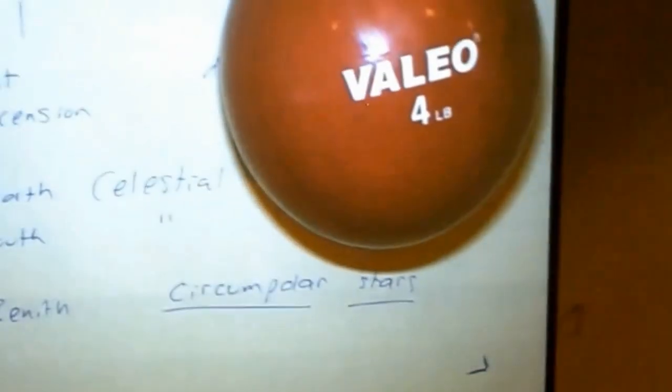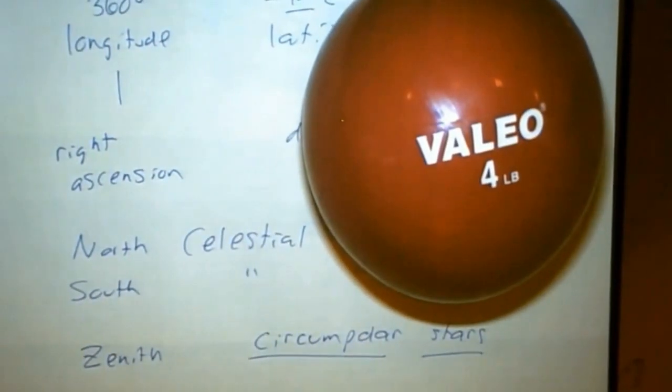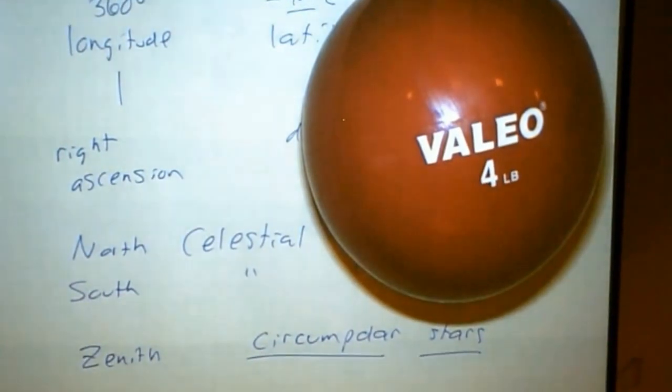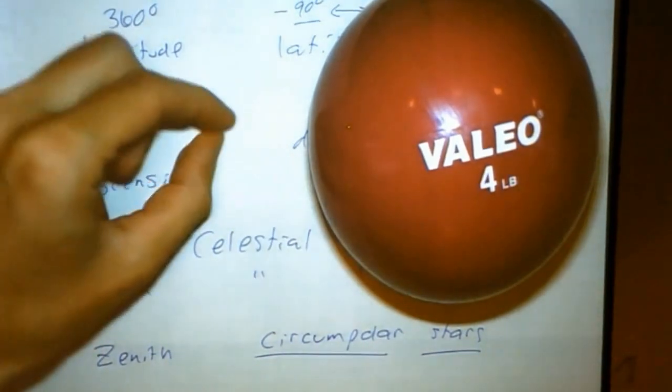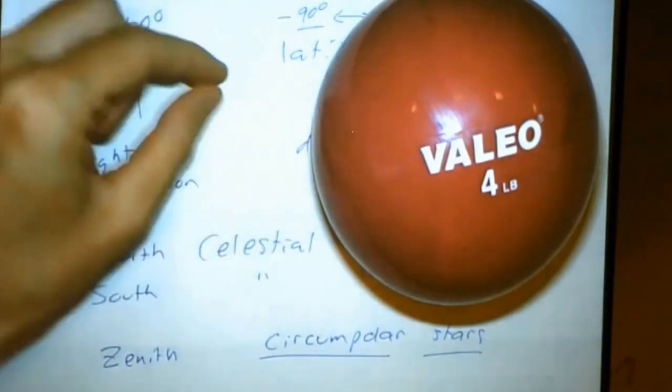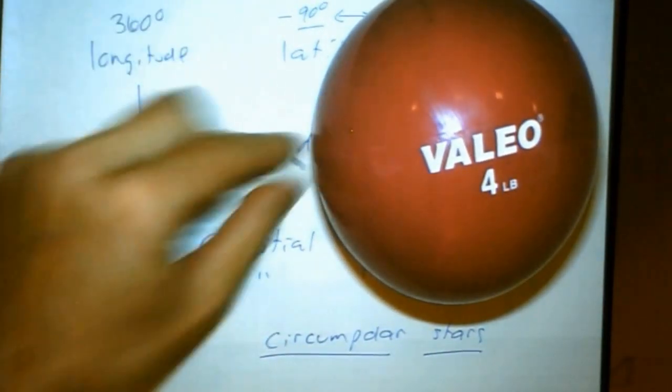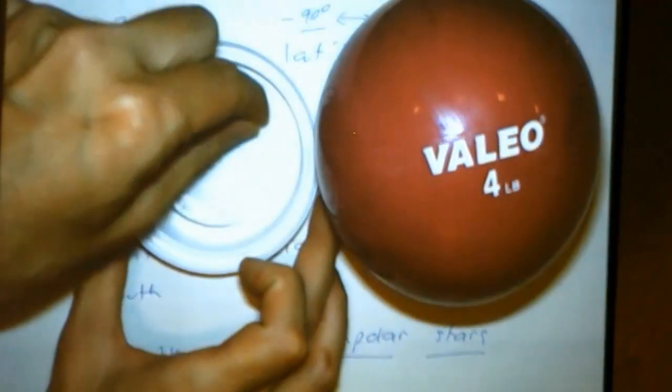Now if the sun is four inches across, that means the Earth is one millimeter across. And I searched around and found a one millimeter ball bearing. There's the Earth. So tiny. Okay, I'm going to lose this thing.